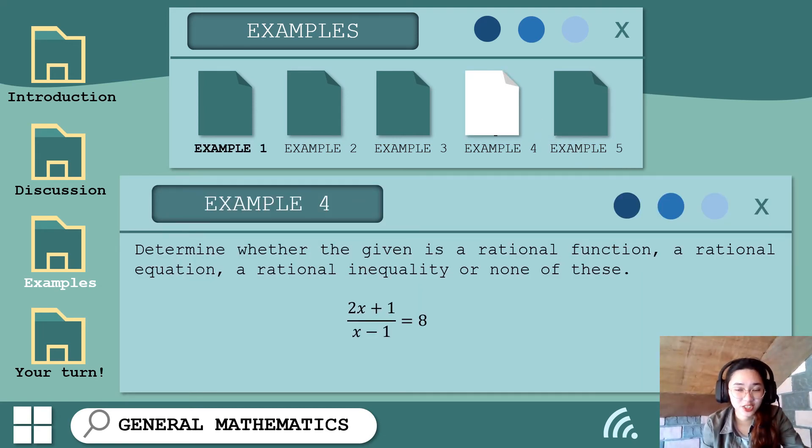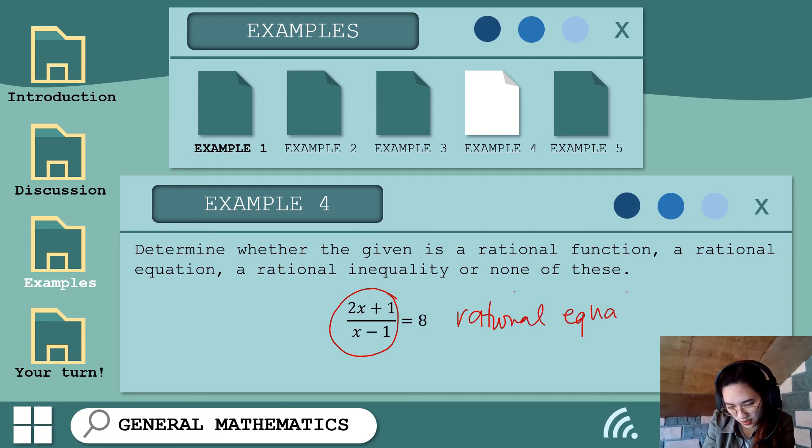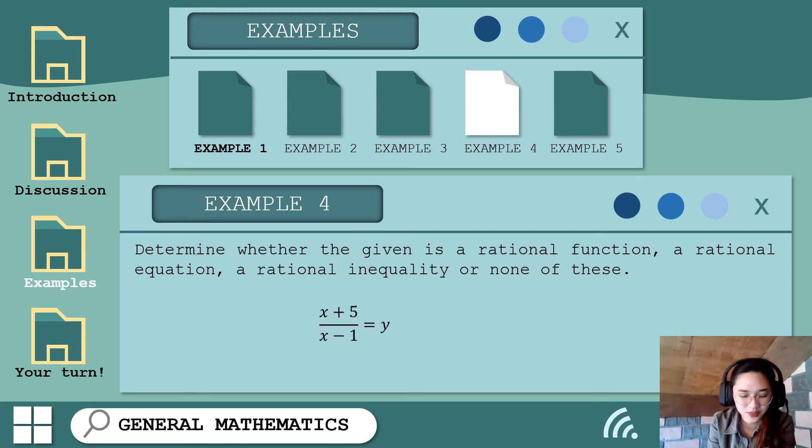Let's determine whether the given is a rational function, a rational equation, a rational inequality, or none of these. Una po, 2x plus 1 over x minus 1 is equal to 8. So kung titignan nyo po, it involves rational expression and meron tayong equal sign. So automatic, dapat alam nyo na po na ito ay rational equation. And so, bakit po hindi sya rational function? Kasi wala naman po relationship between y and x. Wala naman po tayong y dyan. So dapat alam nyo na agad na ito po ay rational equation. Another: x plus 5 over x minus 1 is equal to y. Yan, meron na po tayong y at x. Dahil may y at x na tayo, dapat automatic alam nyo na po na ito ay rational function. Yan, that is a rational function. Merong equal sign.